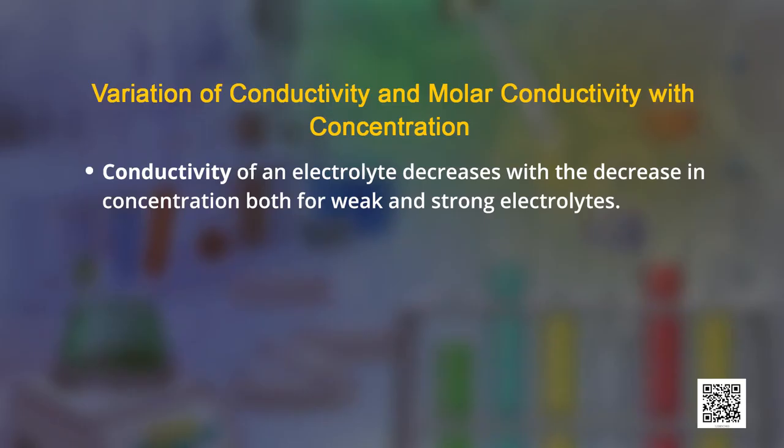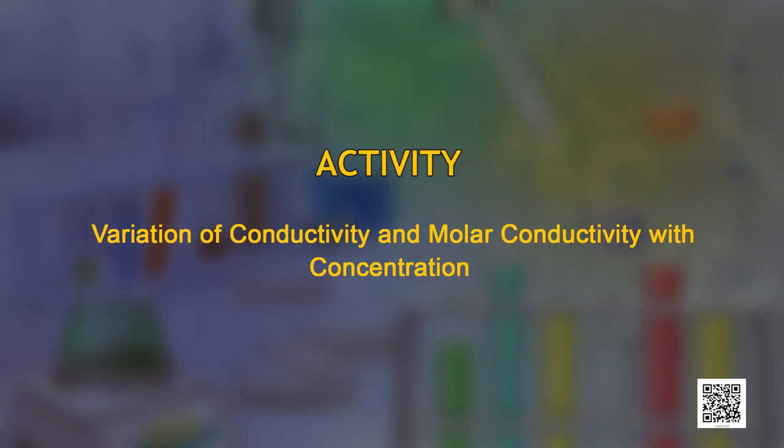From the expressions discussed, we realize that conductivity of an electrolyte decreases with a decrease in concentration, for both weak and strong electrolytes. This is due to the fact that the number of ions per unit volume that carry the current decreases on dilution. Whereas molar conductivity increases with decrease in concentration. Conductivity depends on the number of ions and the mobility of these ions.